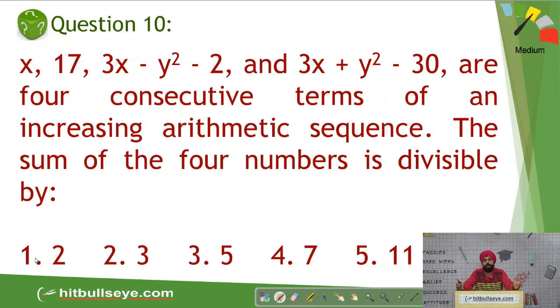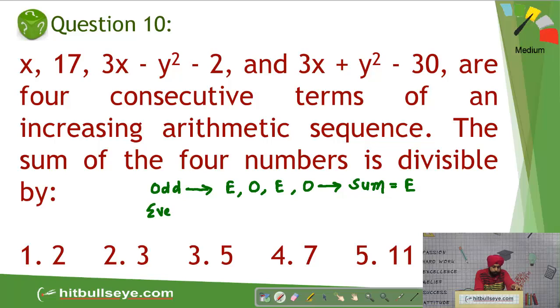Moving on, it is a simple question students, based on odd and even terms. You can see here, four terms of an AP is given. One term is given to be 17. There are two possible cases. One case is the difference is odd. If the difference happens to be odd, the terms will be even, odd, even and odd. There are two odd terms and two even terms. So what can you say about sum students? It will be definitely even. Similarly, if the difference happens to be even students, in that case the all terms will be odd only and their sum even in that case will be even. So sum is even means it will always be divisible by 2. So first option.